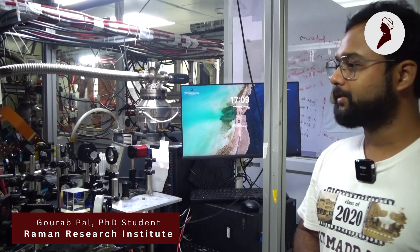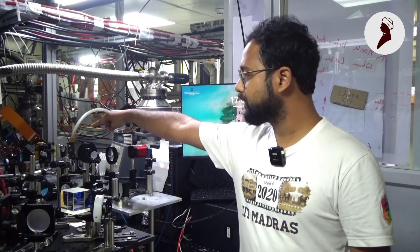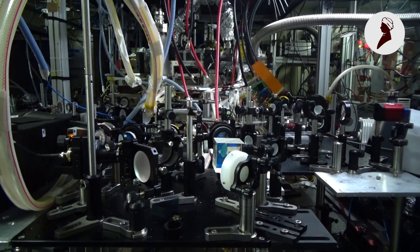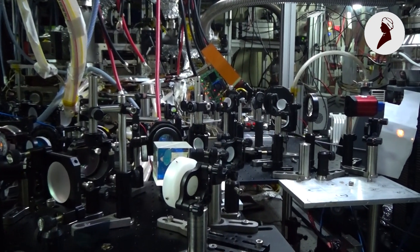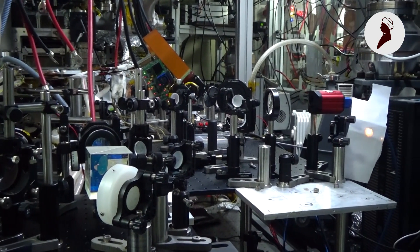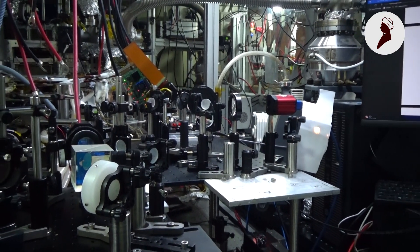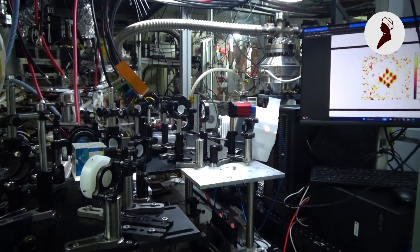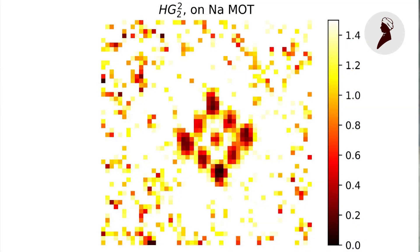This is a device called the digital micromirror device. When we shine a laser light on this mirror chip, you can actually shape the laser beams in whatever structure you want. Using this device, you can create different structure potentials. And with this potential, you can actually trap the ultra-cold atoms in arbitrary structure geometry.